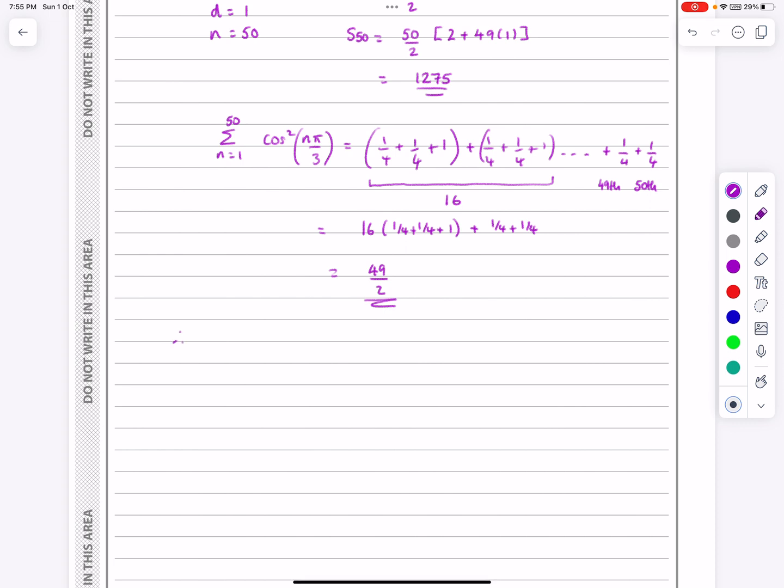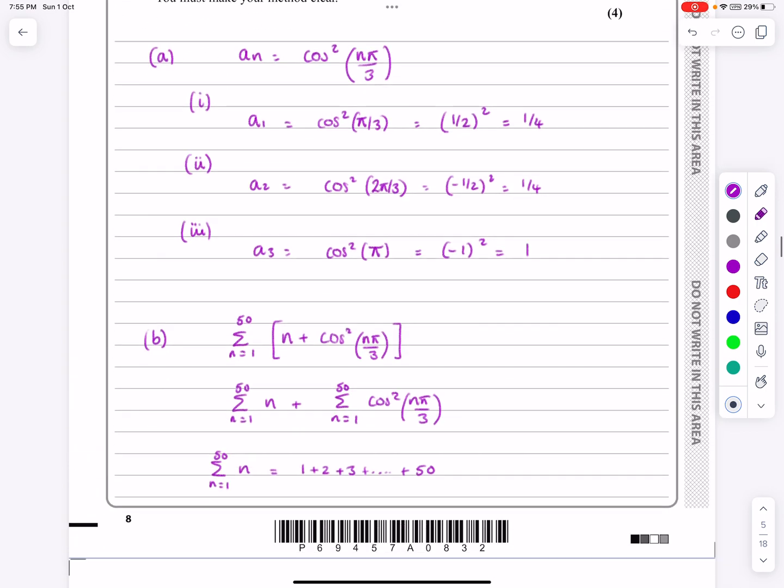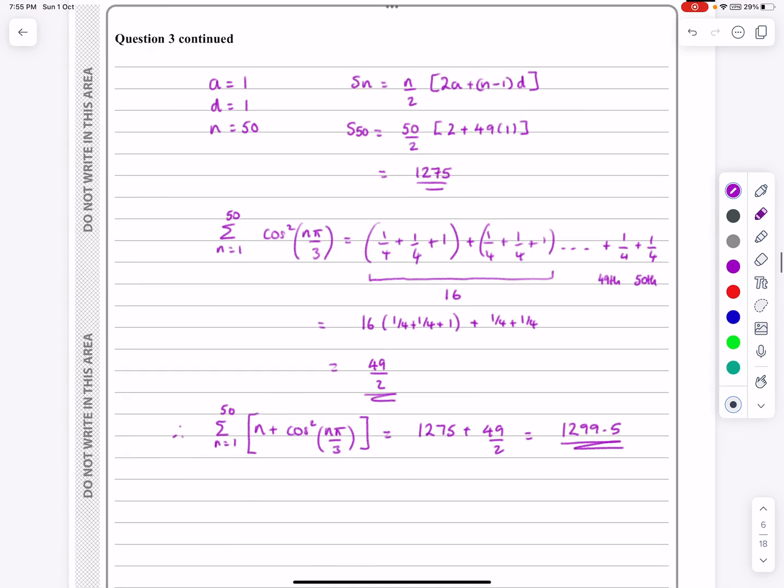So now, putting all that work together, n equals 1 to 50 of n plus cos squared n pi over 3. Works out to be the sum of n, which was 1275, plus the sum of the trig function, which is 49 over 2. And then whatever that all works out to be, 1299.5. Apparently, let's just go back. Does it say anything about decimal places? No, it just says make your method clear. Hopefully, I've made my method clear there. And I should get full marks for that. Hope that makes sense to everyone.